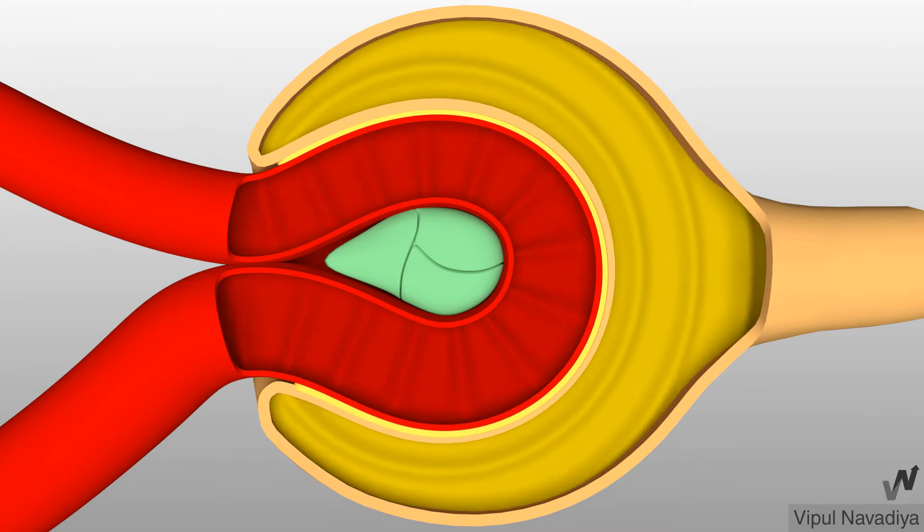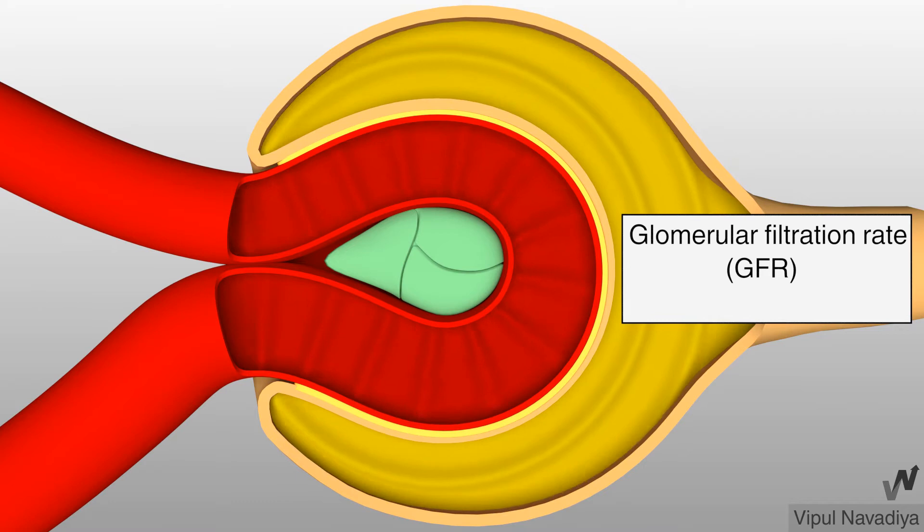Glomerular filtration is basically the process of filtration of blood through glomerular capillaries into Bowman's capsule. Glomerular filtration rate or GFR is total quantity of filtrate formed in all the nephrons of both the kidneys in a given unit of time. Normal GFR is 125 ml per minute or 180 liters per day. That means both the kidneys collectively form 125 ml filtrate in one minute or 180 liter filtrate in one day.